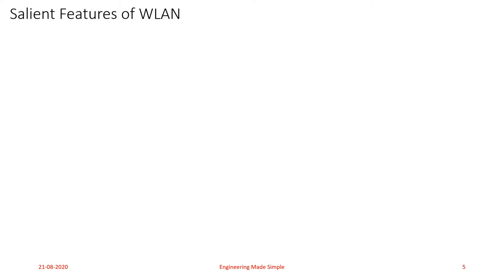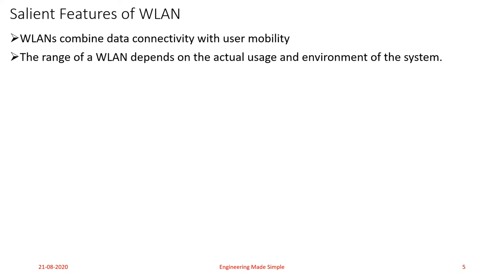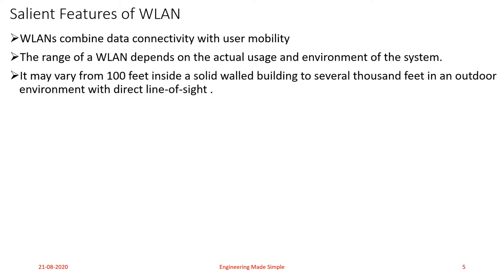Now let us move on to the salient features of WLAN. The first feature is that wireless local area networks combine data connectivity and user mobility, which was a drawback in the case of wired LANs — wired LANs would only provide data connectivity but did not provide user mobility. This was overcome by wireless LANs. The range of a WLAN depends on the actual usage and environment of the system. The coverage radius can vary from 100 feet inside a solid-wall building to several thousand feet in an outdoor environment with direct line of sight.